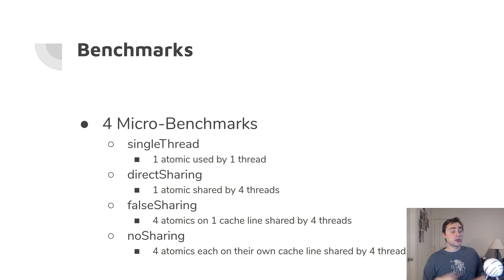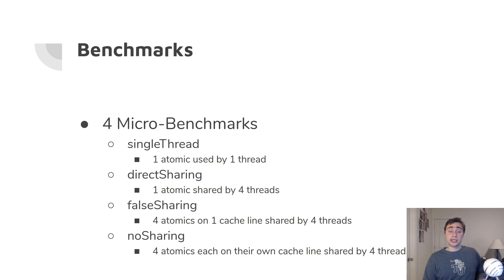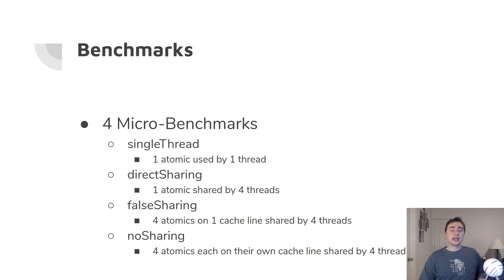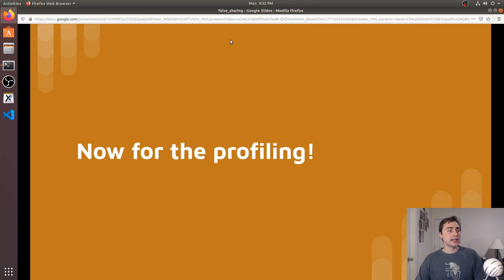The microbenchmarks include: a single-threaded one where one thread updates one atomic integer; a direct sharing example where four threads all atomically increment the same integer; a false sharing benchmark where four integers get mapped to the same cache line and are each updated by one of four threads; and a no-sharing benchmark showing how to avoid false sharing by aligning those atomic integers so they each land on their own cache line.